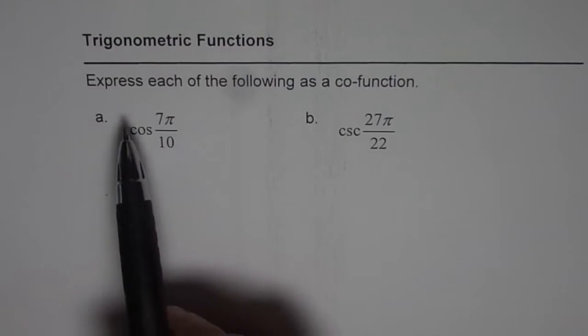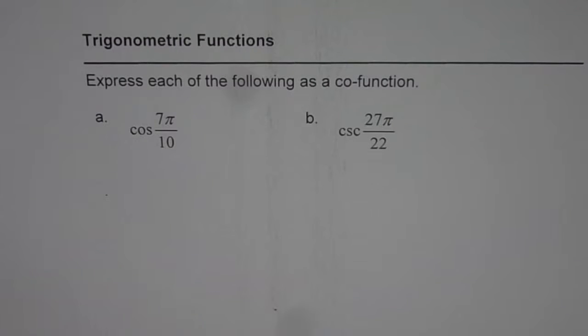Question is, express each of the following as a co-function: cos 7π/10 and cosecant 27π/22. So I have purposely taken two examples, one with the primary trigonometric ratio and the other one with secondary trigonometric ratio.